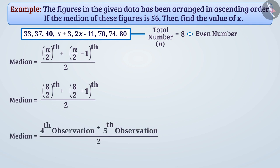Here the fourth observation is x + 3 and the fifth is 2x - 11. Therefore, median is equal to (x + 3 + 2x - 11) divided by 2.